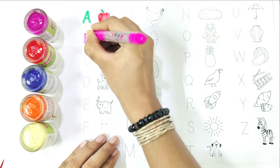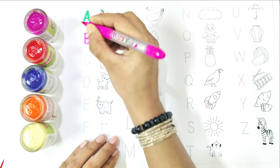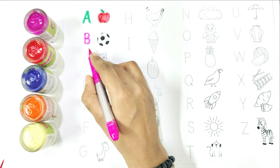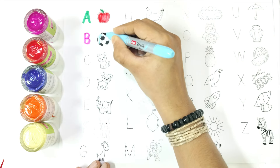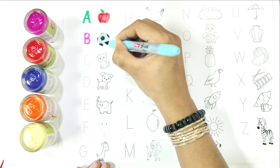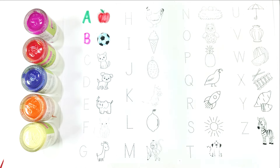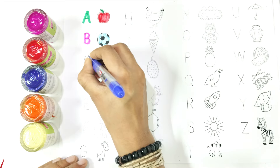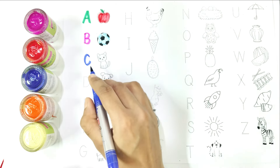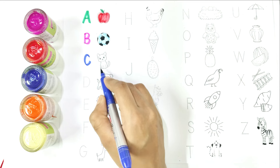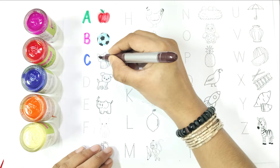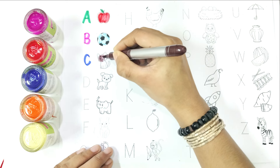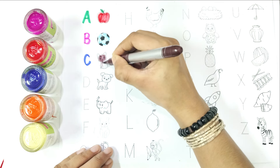Write with me. B — B is for ball. Again, say with me: B is for ball. Write with me. C — C is for cat. Again, say with me: C is for cat.